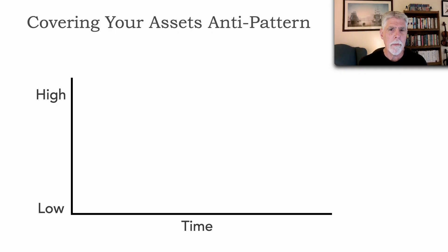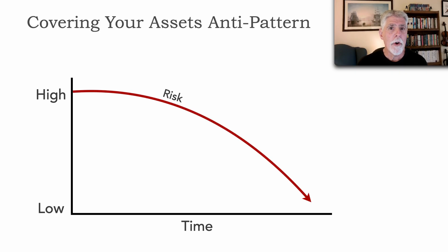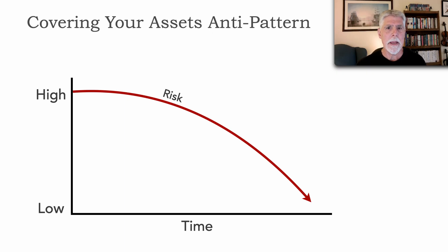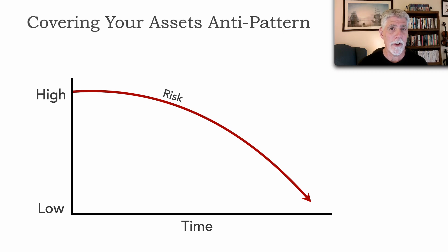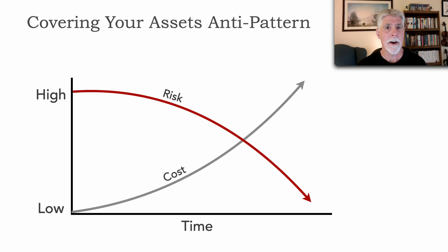In this graph we have time going across and a magnitude of low or high. If we are faced with an architectural decision and we make that decision immediately, the risk that we make the wrong one is fairly high at low times. But as we start gathering information and thinking more about the problem, the risk tends to go down. However, there's another factor to take into account: the cost of a decision. If we make a decision immediately the cost is fairly low, but the longer we wait the cost starts rising, and in most cases exponentially.